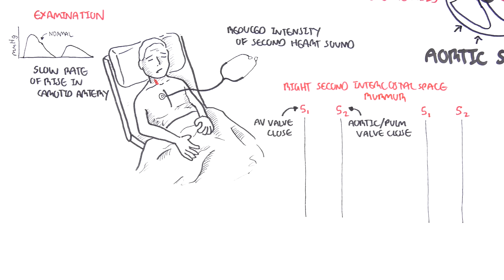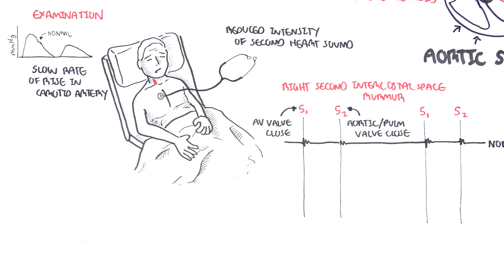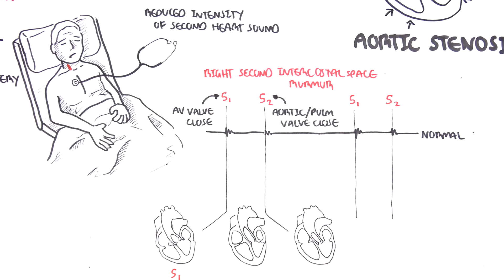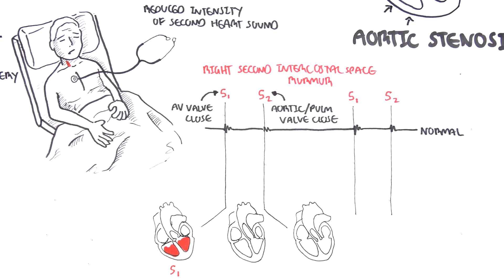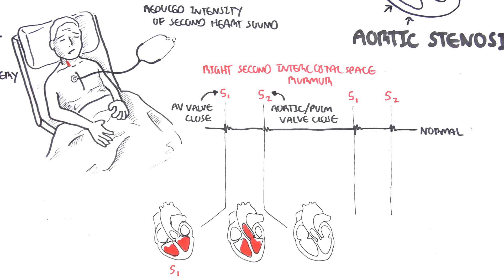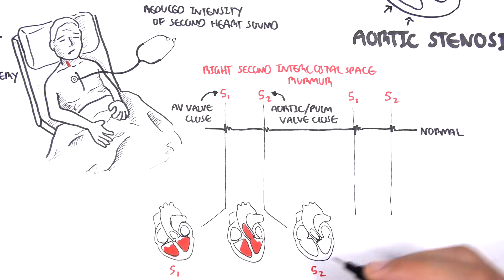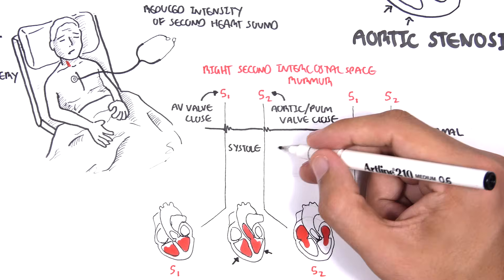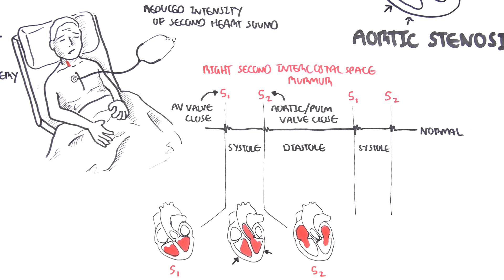We are listening to the right second intercostal space murmur in aortic stenosis. But first, looking at the normal. We have a first heart sound and then a second heart sound. Drawing these sounds out, we can divide it into three things. S1 is when your AV valves close and your blood is in the ventricles. The ventricles begin to contract. Between S1 and S2, your ventricles are contracting so hard that it pushes blood through the aortic valve. S2, your aortic valve closes again, allowing the ventricles to fill back with blood. Thus we can say that between S1 and S2 is systole when the ventricles are contracting, and from S2 to S1 is diastole when the ventricles are relaxed and filled back with blood.